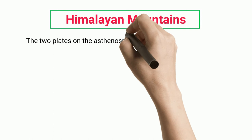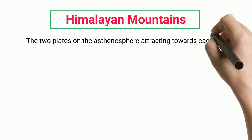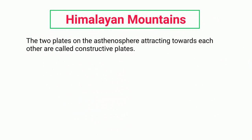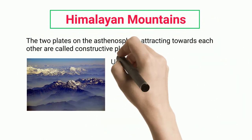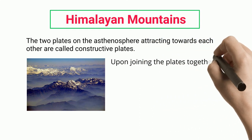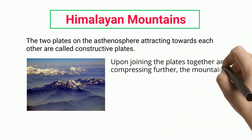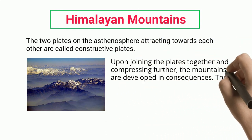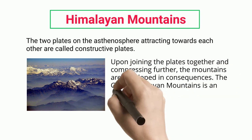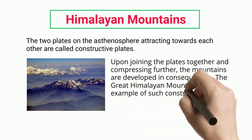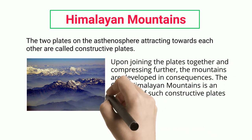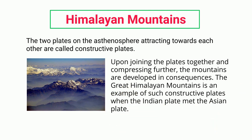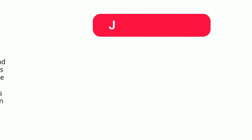Himalayan mountains: the two plates on the asthenosphere attracting toward each other are called constructive plates. Upon joining and compressing further, mountains are developed. The great Himalayan Mountains are an example — they formed when the Indian Plate met the Asian Plate.